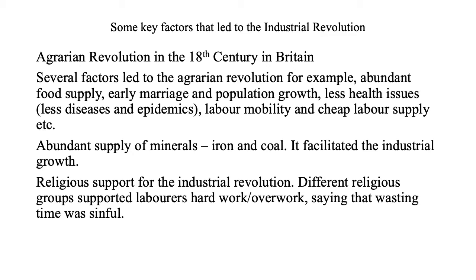Several factors led to the Agrarian Revolution. For example, abundant food supply, early marriage and population growth, less health issues, less diseases and epidemics, labor mobility and cheap labor supply. Overall, there was stability in society and an abundant supply of minerals such as coal and iron that facilitated industrial growth.